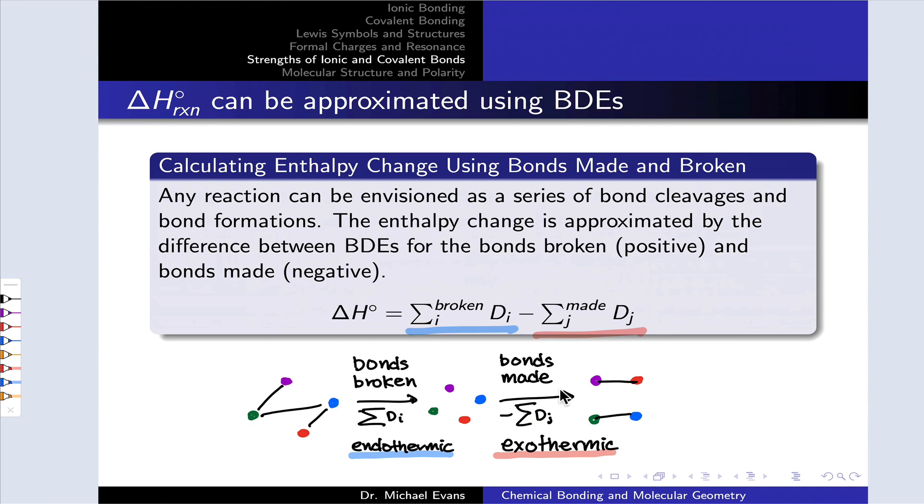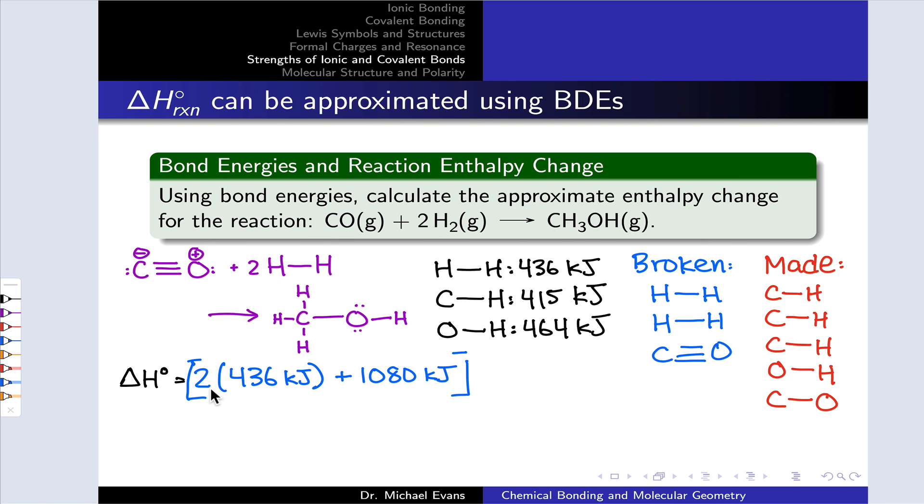Now, we apply the equation on the previous slide. We sum over the bonds broken, list their BDEs as positive numbers, and then we sum over the bonds made, listing their BDEs as negative numbers, or inside brackets with a negative sign out front. So for the bonds broken, we have two H-H bonds broken. There is the bond dissociation energy of the H-H bond, and we have the CO triple bond broken, and that actually wasn't tabulated here, but it should have been. That is 1,080 kilojoules for the CO triple bond there. Among the bonds made, we're going to throw a negative sign out front, put everything in brackets to make all these numbers negative.